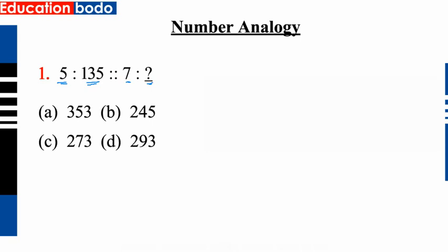Option B is 245, option C is 273, option D is 293. Okay, let's solve it. Because 5 cube — 5 cubed column — okay, 5 cube, 5 cubed is one...